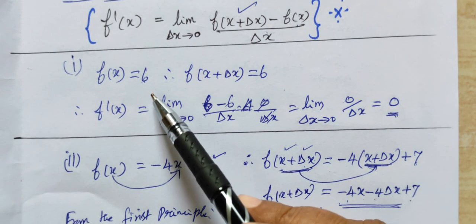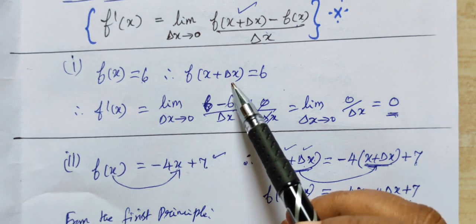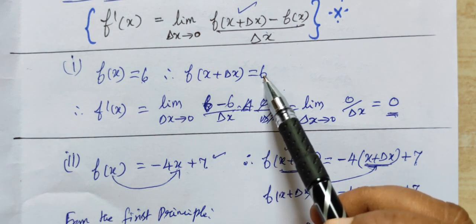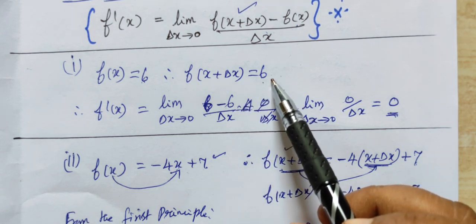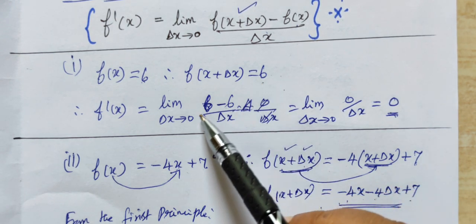Then f(x + delta x) is 6. If you have x here, then delta x will be subtracted, but there is no x, then it will be 6.